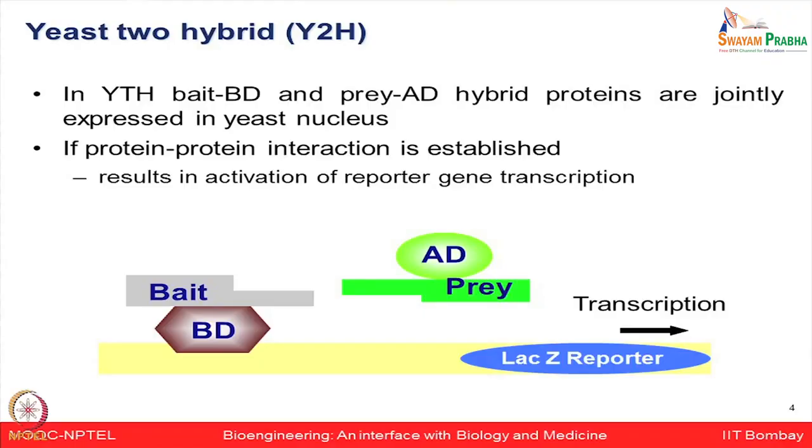Another method used in the past is the yeast two-hybrid method. In yeast two-hybrid, the bait binding domain and the prey activation domain hybrid proteins are jointly expressed in the yeast nucleus. If protein-protein interaction is established, it results in activation of the reporter gene and you can see transcription initiation occur. However, it results in a large number of false positives because you get a big list of interactors but are not entirely sure how many are directly interacting. These traditional methods are easy to achieve but may include sticky proteins and false positives.